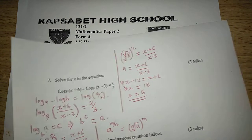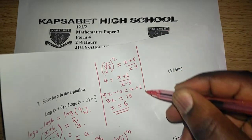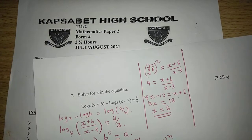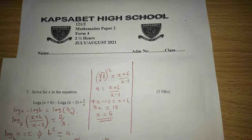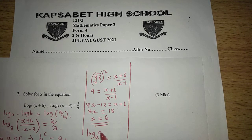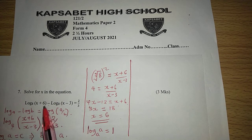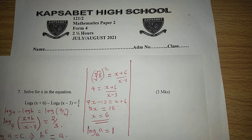Alternatively, we can apply the laws of logarithm again. We have a law of logarithm which says that when we have the logarithm of a to base a, this equals 1. So according to the base in this question, which is 8, we can say the log of 8 to base 8 equals 1, and we apply it on the right-hand side of the equation.